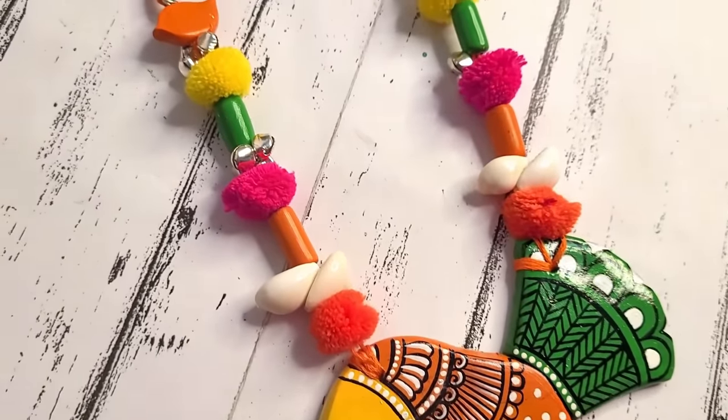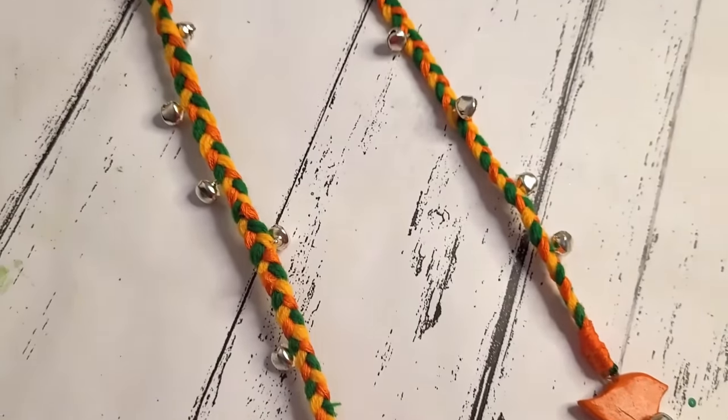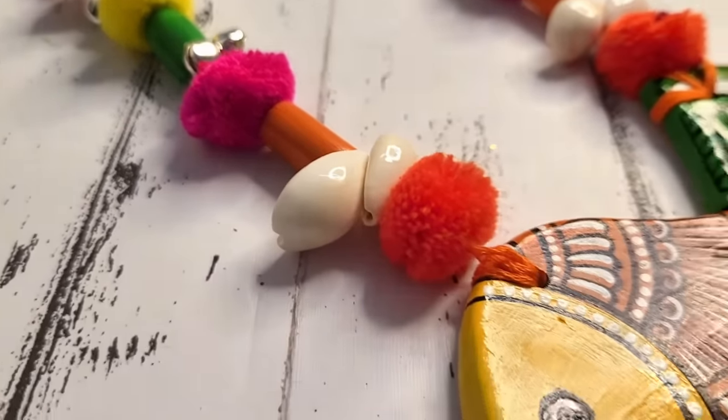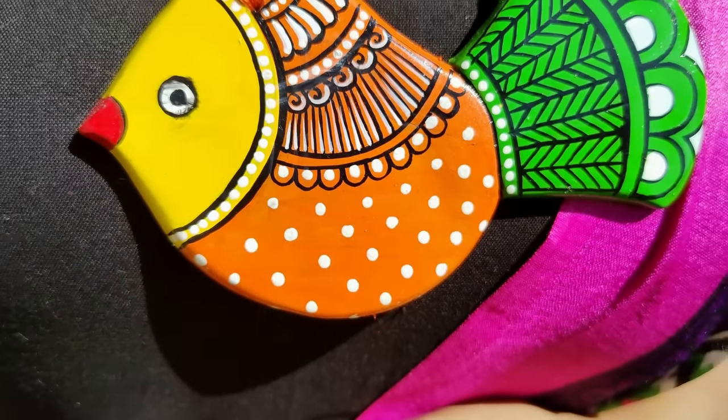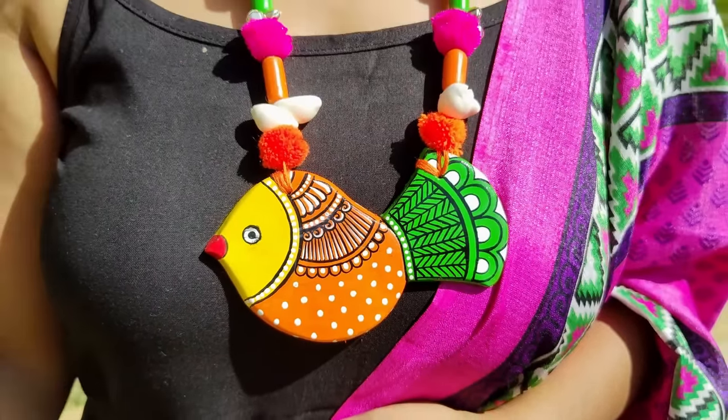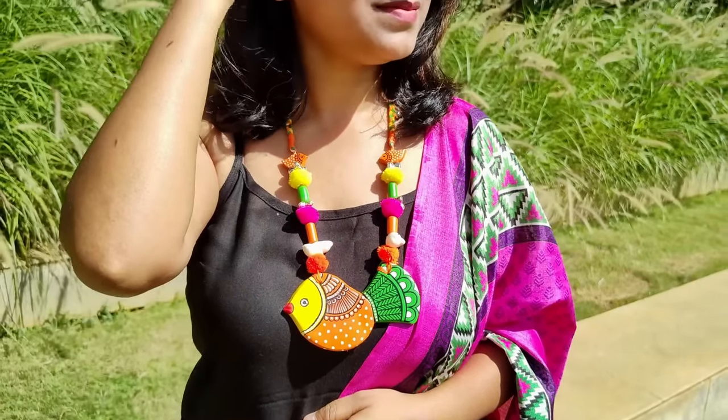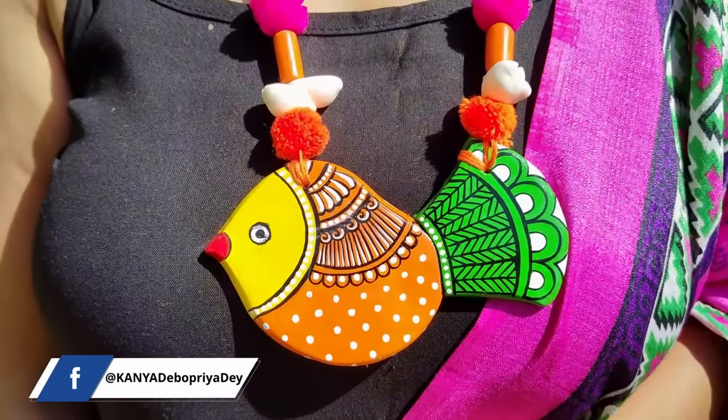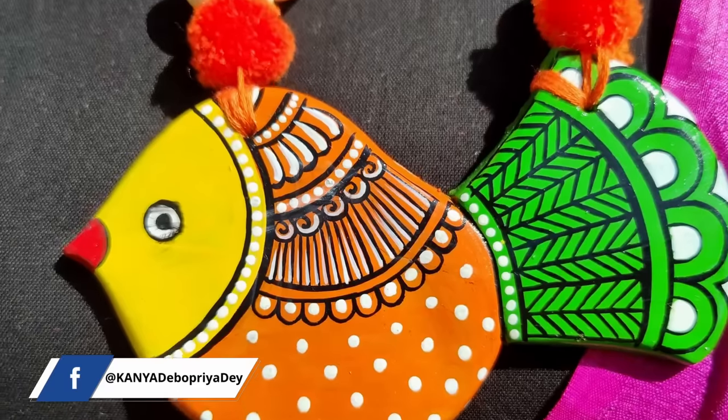And this is how the neck piece has turned out. This was totally from scratch and I'm just loving the outcome. Pair it with sari, kurti, or indo-western and you're ready to rock. If you find this jewelry DIY ideas interesting then give me a thumbs up in the comment section below, and wait, don't forget to subscribe.